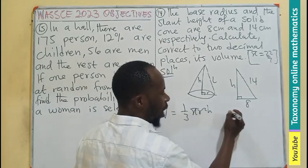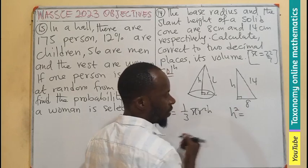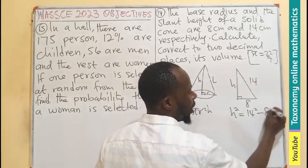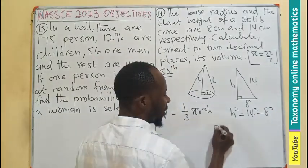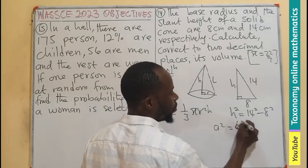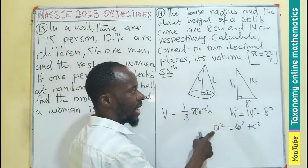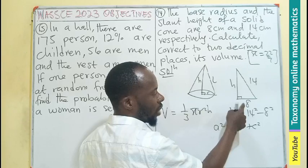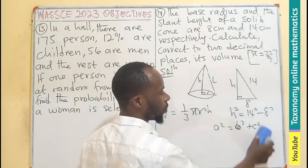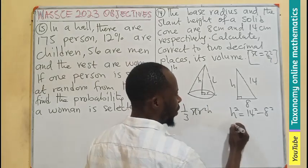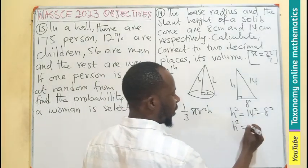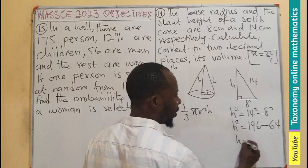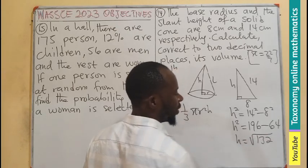From here, h squared equals the longer side, 14 squared minus 8 squared. The formula is a² equals b² plus c², if a is the longer side. This is 14² minus 8². So h² equals 196 minus 64. So h is the root of 132.